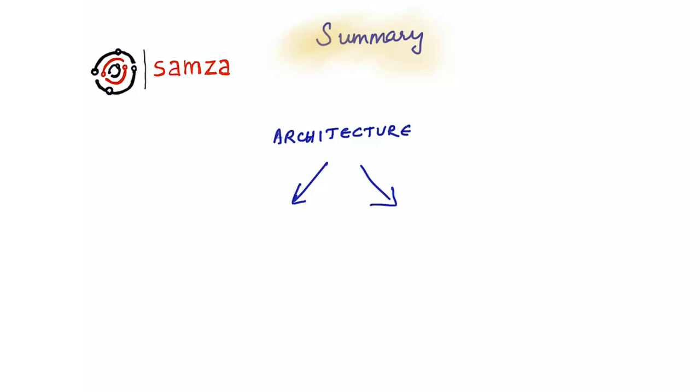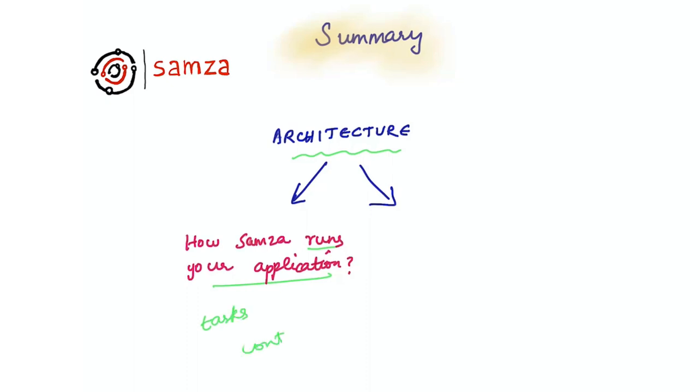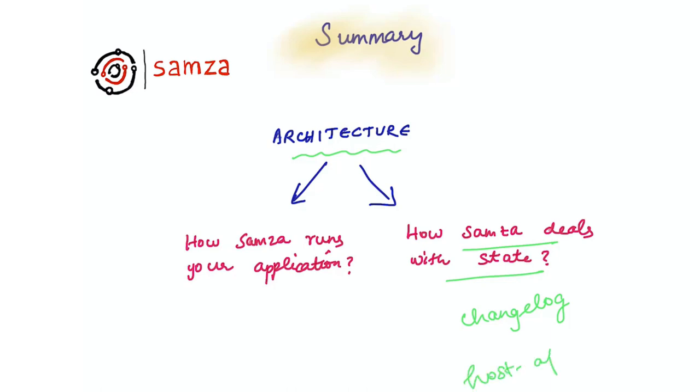Let's recap what we covered in this section on Samza's architecture. We discussed how Samza runs your application by partitioning it into tasks and running it across multiple containers. We also saw how Samza deals with state, how a change log can ensure fault tolerance of state and help recovery, and how host affinity helps with faster recovery.